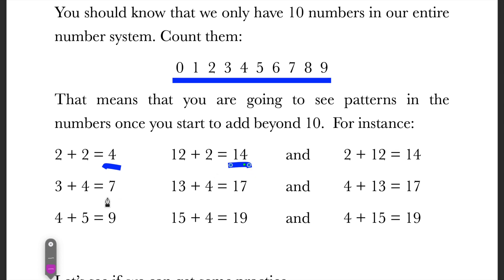Let's say we have 3 plus 4 is equal to 7. We already know that. Then 13 plus 4 is going to be equal to 17. And it doesn't matter how I do it. Even if I make it 4 plus 13 and switch the numbers around, it's still going to be equal to 17. It doesn't matter.